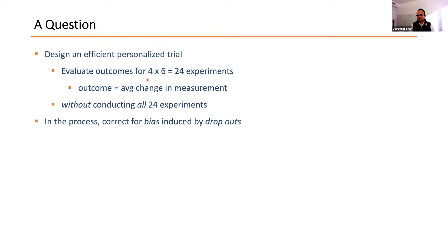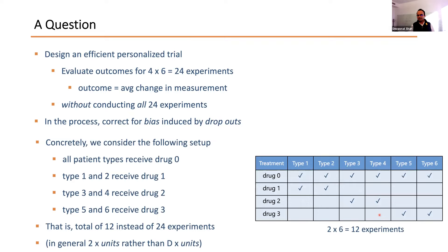What if we designed a more efficient experiment like this: all patient types get one treatment, drug zero, and then patient types one and two get drug one, patient types three and four get drug two, and patient types five and six get drug three — with missing cells not observed. We would then fill in the missing cells from these observations, using 12 experiments to extrapolate to 24. In this setting, we had enough data so that we had ground truth available.